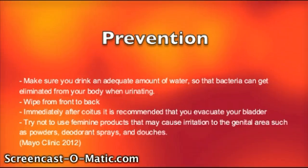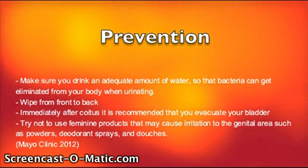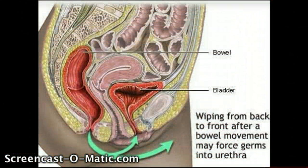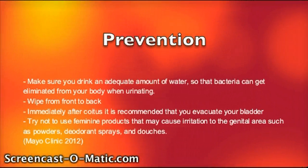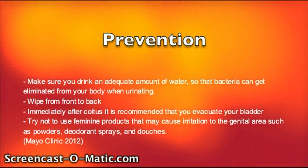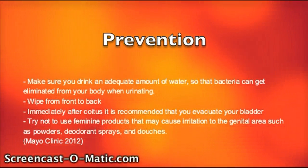Prevention! Make sure you drink an adequate amount of water so that bacteria can get eliminated from your body when urinating. Wipe from front to back! As you can see in the picture, the anus and the urethra opening are very close in proximity, and wiping back to front can cause bacteria to be forced into the urethra. Immediately after sex, it is recommended that you evacuate your bladder. Try not to use feminine products that may cause irritation to the genital area, such as powders, deodorant sprays, and douches.